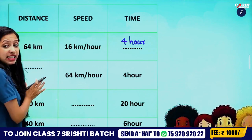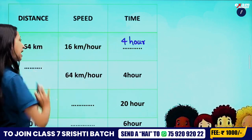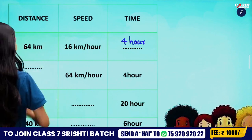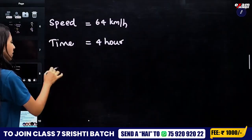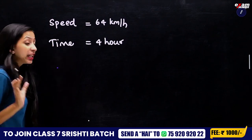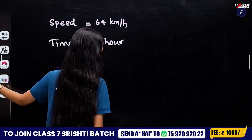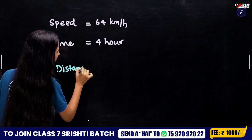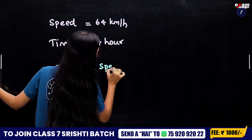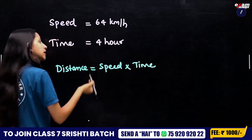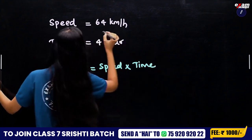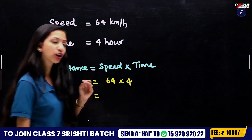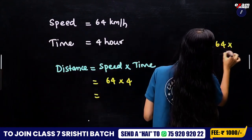How do we get the distance? The speed is 64 km per hour and the time is 4 hours — how do we get the distance? Distance is equal to speed into time. Speed into time: 64 into 4.